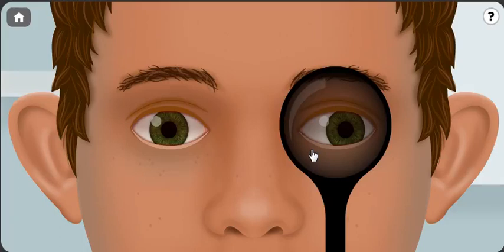Comitant deviation, outward deviation of the eye. And comitant means that the angle of the right eye and the left eye are the same.